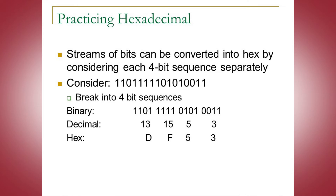Practicing hexadecimal, we can have streams of bits that can be converted into hex by considering each 4-bit sequence separately. If you look at this long sequence of 16 different binary numbers, you can break them into 4-bit sequences that are a little bit easier to process in terms of converting them to decimal and hex. So we have 4 different groups of numbers, with 4 bits per each group.